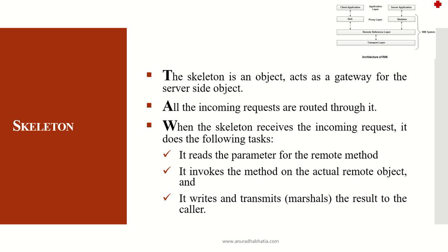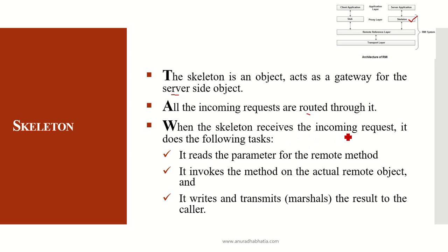A skeleton is an object that acts as a gateway for the server side — just as the stub acts as a gateway for the client side. All incoming requests are routed through the skeleton. When the skeleton receives an incoming request, it performs the following tasks.